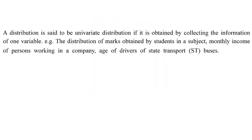Any distribution where information from a unit is collected for only one variable is called univariate data. Examples include the distribution of marks obtained by students in a subject, monthly income of a person, and age of drivers.